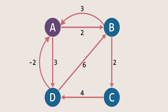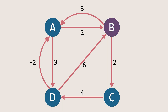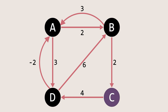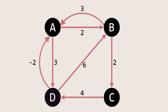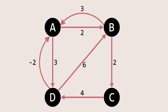But what if we want to find the shortest path between all pairs of nodes? One approach could be to run those single-source algorithms on each node once. However, this method can be inefficient, and that's where the Floyd-Warshall algorithm comes to the rescue.